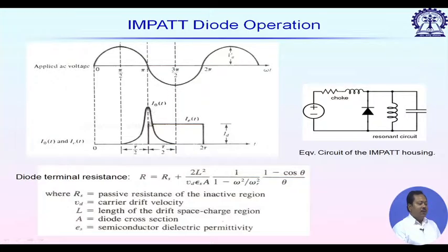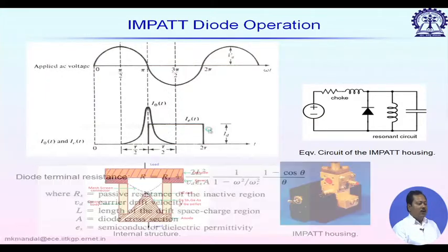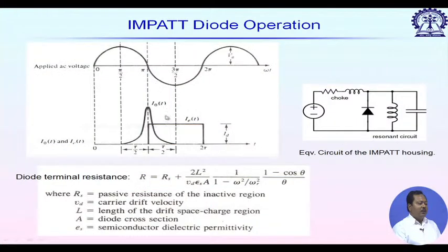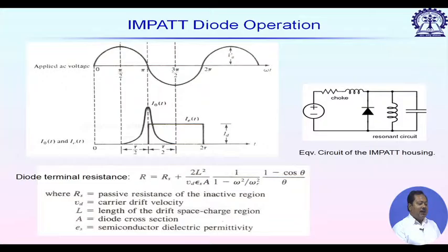After the pi point, electron-hole pair generation does not instantaneously stop; it continues to some extent. At the negative-most point of the AC cycle it stops completely. The generated holes then drift through the i-region, taking finite time to reach the p+ region. The external current component is exactly in opposite phase, and the length of the i-region is chosen to provide another pi/2 phase shift, so the current due to avalanche breakdown is exactly in opposite phase to the applied RF signal.